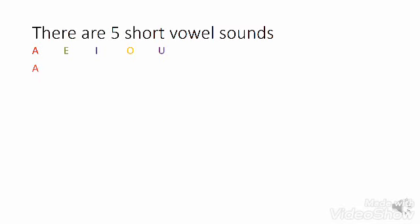For vowel A, the short pronunciation is A, as in nap, cat, and let. For vowel E, the short pronunciation is E, as in egg, bell, and elephant.